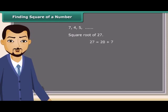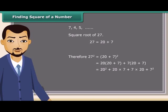We know 27 is a sum of 20 and 7. Therefore, a square of 27 is equal to 20 plus 7 whole square, is equal to 20 into 20 plus 7 plus 7 into 20 plus 7, which is equal to 400 plus 140 plus 140 plus 49, which is equal to 729.